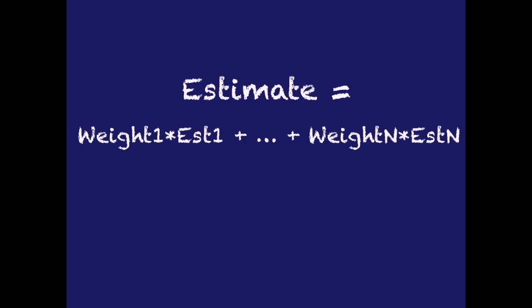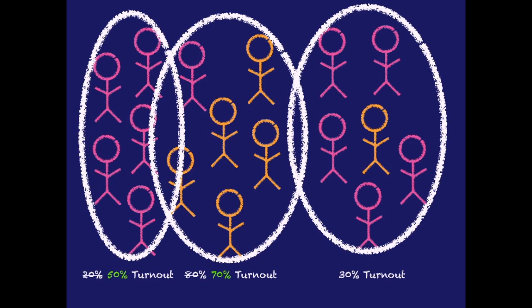Every estimate in an opinion poll is constructed by a weighted average of the different sub-estimates of each stratum. Those weights are bets — you make them based on historical judgments about how different groups may respond to certain candidates or to voting in general. And those bets can be off. If we underestimate a certain group's voting turnout or overestimate another group's turnout, we might have issues with the way we construct our estimate.